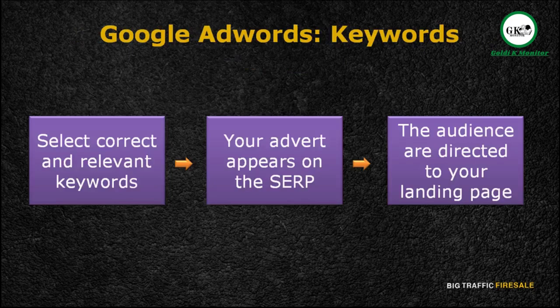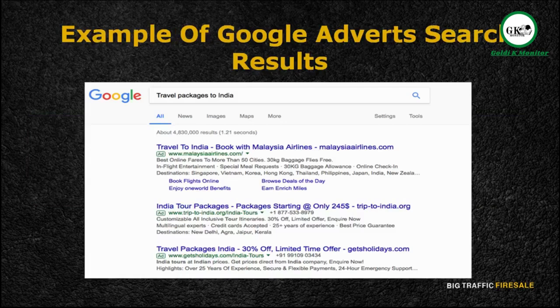When you are already set up, it's time to delve into the building blocks — understanding what makes Google AdWords work: keywords. Selecting the correct and relevant keywords to direct the audience to your landing page is key. As the advertiser, you select a keyword that a searcher might type when searching for their particular interest on Google. Then you create an advert that will appear on the SERP based on those keywords. For example, when a person searches for 'travel packages to India,' adverts may appear alongside the search either at the top or on the right-hand side of the SERP.